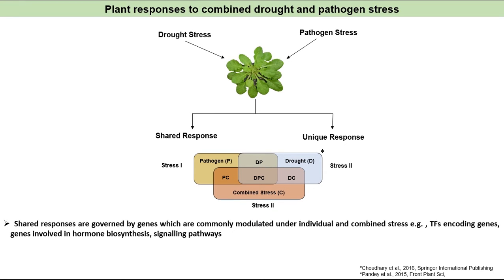In field conditions, plants are often exposed to a combination of stresses. Combined drought and pathogen stress is one of the major occurring stresses in field conditions. Under combined drought and pathogen stress, plants involve shared and unique responses. Unique responses are governed by genes specifically expressed under individual and combined stress, while shared responses are governed by genes commonly modulated under both, for example transcription factor encoding genes, genes involved in hormone biosynthesis, and signaling pathways.